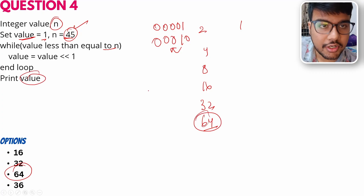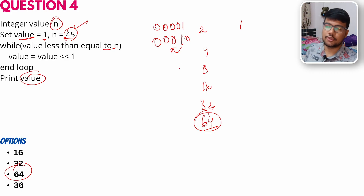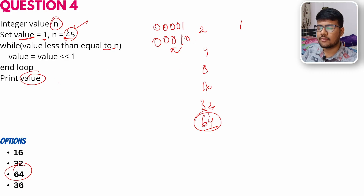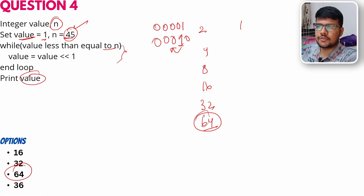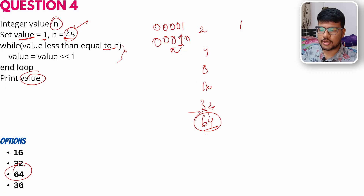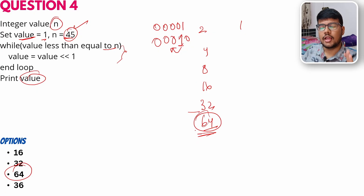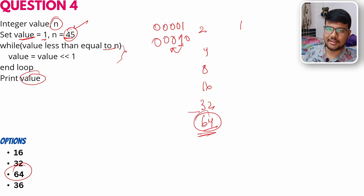The value goes 32 → 64, and 64 exceeds 45, so the loop stops. The final value is 64. If you're unsure why, study bit manipulation: every left shift multiplies the value by 2. The correct answer is 64.